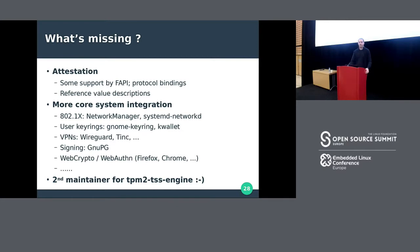What's still missing: one of the main TPM capabilities — attestation — is being built into the Feature API, but we still need protocol bindings. We also want more core system integration: Network Manager for IEEE 802.1X, GNOME Keyring, and GNU PG for signing tarballs. If you're in any of those communities, please come talk to me. And if someone knows OpenSSL well, especially the EVP key interface, I could use a second maintainer for the OpenSSL engine.